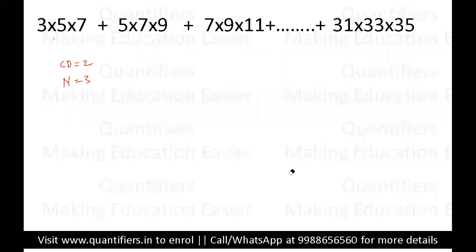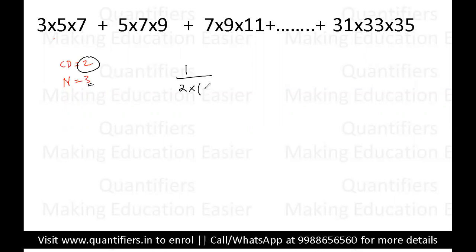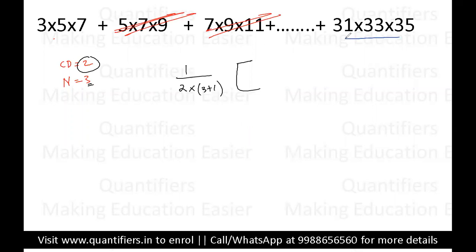Now, the answer formula is: one divided by common difference, into (n + 1). So with common difference two and n equal to three, the first part of the formula gives 1 divided by 2 into (3 + 1). Now for the second part, you have to multiply this by an expression — just ignore all the terms except the first and the last.